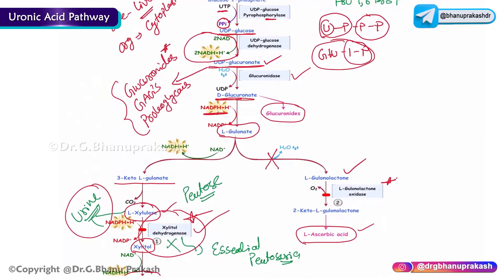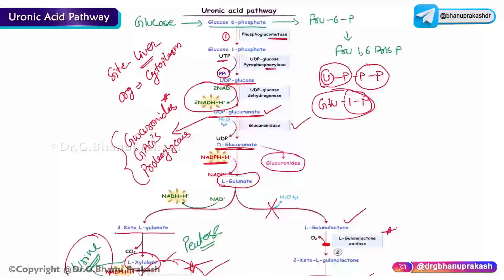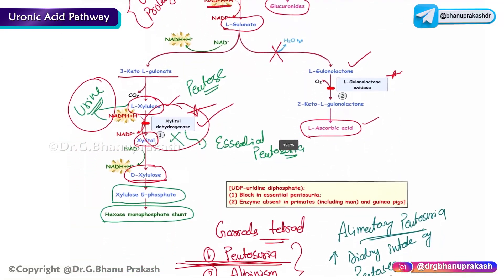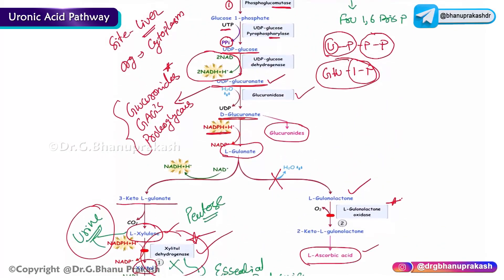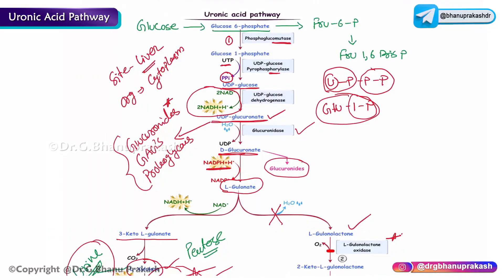In summary, the uronic acid pathway is responsible for the synthesis of glucuronides, glycosaminoglycans, and proteoglycans, and also contributes essential pentoses to the hexose monophosphate (HMP) shunt. The key enzyme is xylitol dehydrogenase. The pathway mainly takes place in the liver (cytoplasm) and is a minor bypass pathway of the oxidative metabolism of glucose.